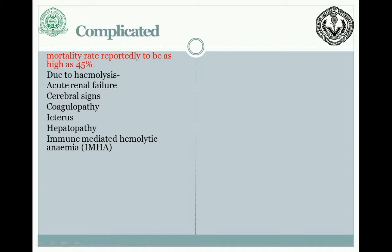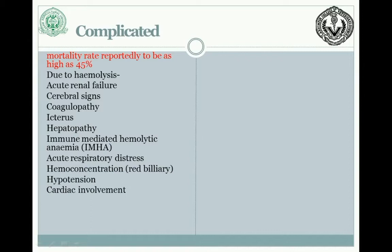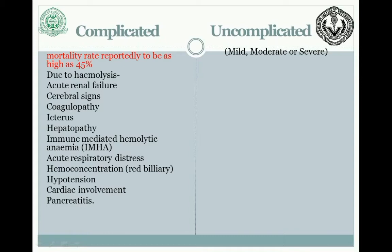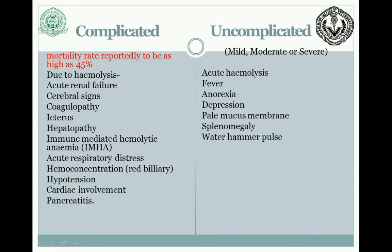The complicated form also includes acute respiratory distress, hemoconcentration — also known as red biliary — hypotension, cardiac involvement, and pancreatitis. The uncomplicated form can be mild, moderate, or severe, and shows acute hemolysis, fever, anorexia, depression, pale mucous membranes, splenomegaly, and weak pulse.